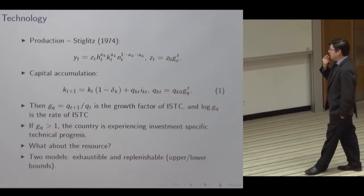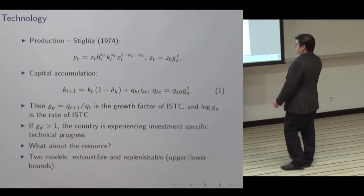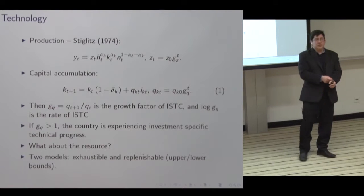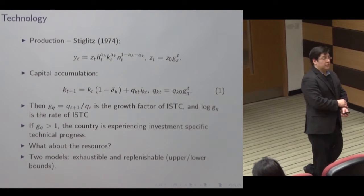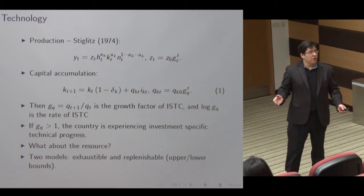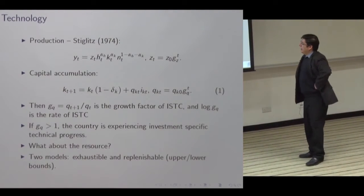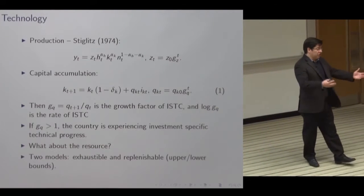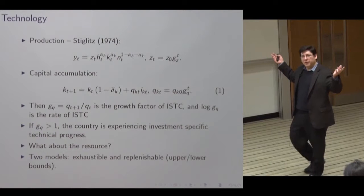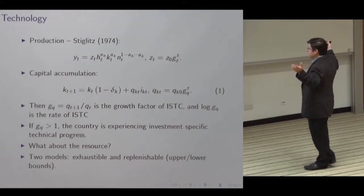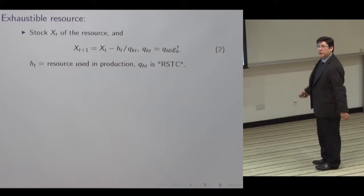There's going to be more than one model of the resource, since there are exhaustible resources and replenishable resources, and each model has different implications for general equilibrium growth accounting. They're essentially going to function as upper and lower bounds on the contribution of ISTC to growth. We could imagine a more complicated model with both kinds of resource, but since it's not obvious how to pin down how much of each kind there is, we use them as bounds rather than trying to interpolate.